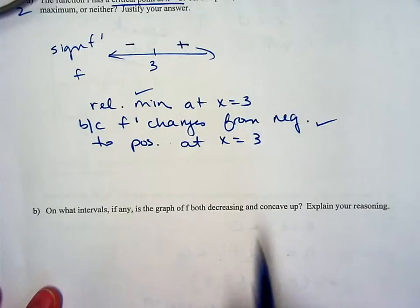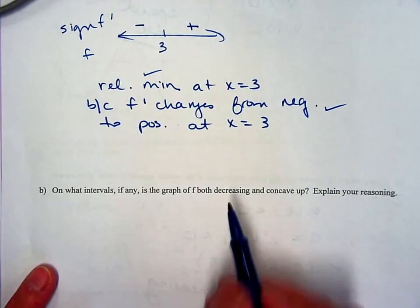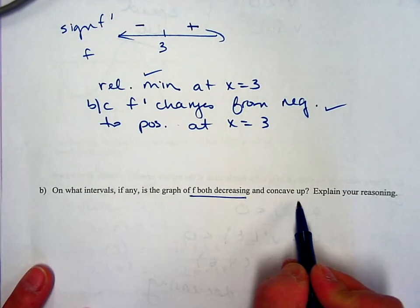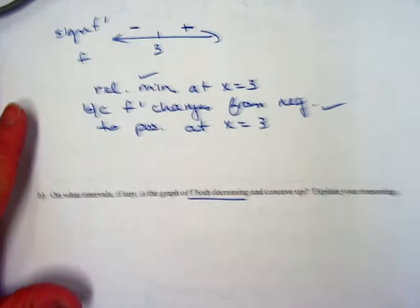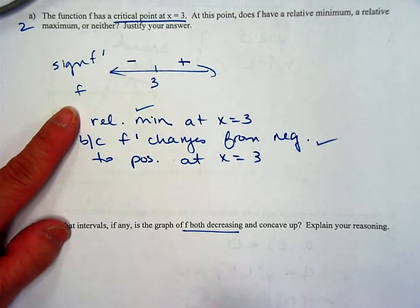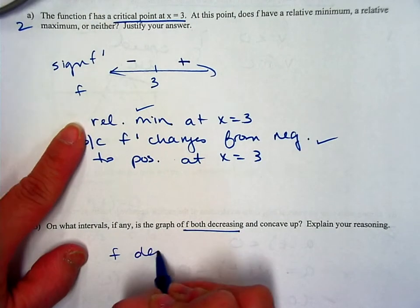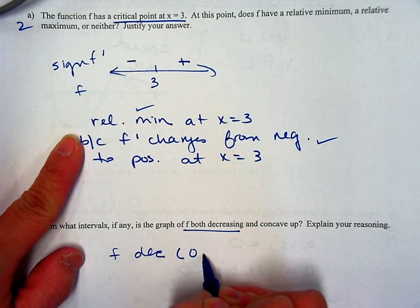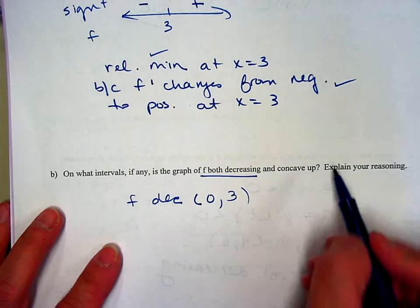Next question. On what interval, is the graph both decreasing and concave up? So if I look at my sign chart from above, I already figured out that f is decreasing from 0 to 3. And it said up here that x is only greater than 0, so be careful. Now I need to figure out when is it concave up.